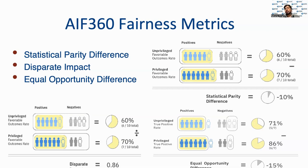We are not so much concerned about the number of people that received care management, but the true positive rate based on some underlying ground truth of who needed the care. The underprivileged group has a 5-to-7 true positive rate and the privileged group has a 6-to-7 true positive rate. The difference between the two is negative 15%, and being away from zero indicates an unfair situation. The negative value indicates it is against the underprivileged group. This represents the equal opportunity difference.